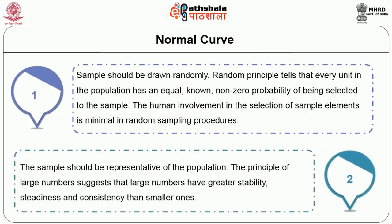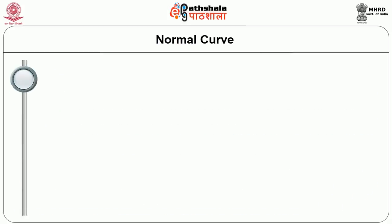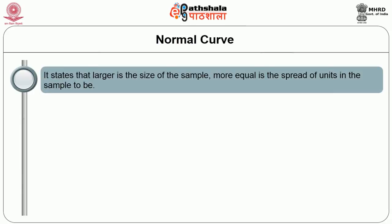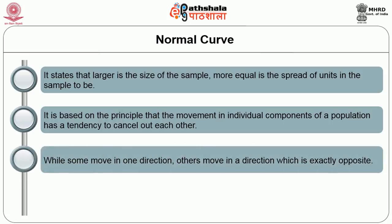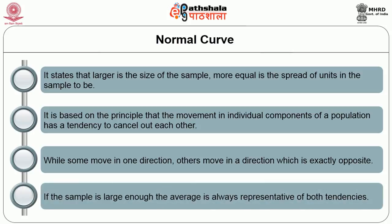Second, the sample should be representative of the population. The principle of large numbers suggests that large numbers have greater stability, steadiness, and consistency than smaller ones. It states that the larger the size of the sample, the more equal is the spread of units in the sample. This is based on the principle that movements in individual components of a population tend to cancel out each other — while some move in one direction, others move in the opposite direction. Therefore, if the sample is large enough, the average is always representative of both tendencies.